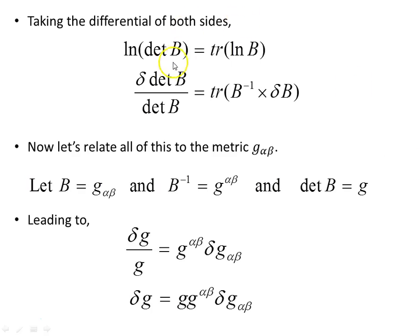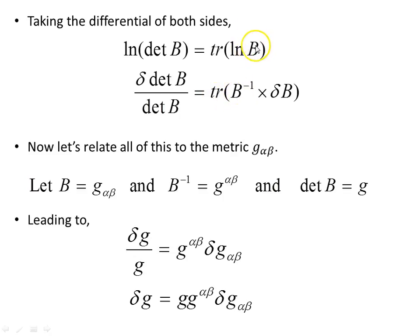Taking the differential of both sides — restating: the natural log of the determinant of B equals the trace of log B — varying that, just as with the normal expression, delta of the determinant of B over the determinant of B equals the trace of delta B over B, which is just B inverse. So we get the trace of B inverse times delta B.